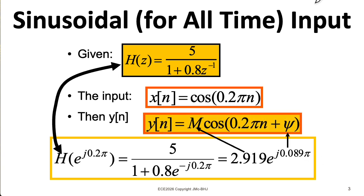So we know the output is going to be a cosine with the same frequency of 0.2 pi. What is the amplitude of the output? Well, it's going to be the amplitude of the input, which is 1, times the magnitude of the frequency response. And the phase of the output is going to be the phase of the input, which is 0, plus the angle of the frequency response.